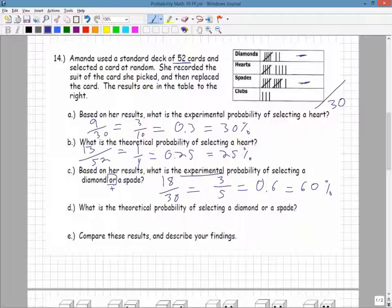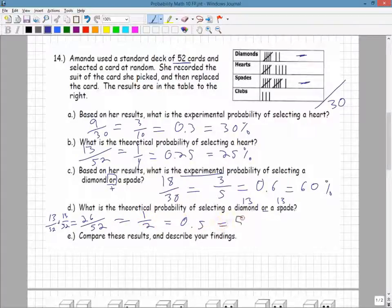What is the theoretical probability of selecting a diamond or a spade? So again, diamonds, there are 13 of them. Spades, there are also 13. Remember, I have a total of 52. So I add 13 and 13. I get 26 out of a total of 52 are diamonds or spades. Essentially, what I'm doing is I'm taking 13 out of 52 plus 13 out of 52 to get 26 out of 52. 26 out of 52 is equal to a half, or 0.5, or 50%.